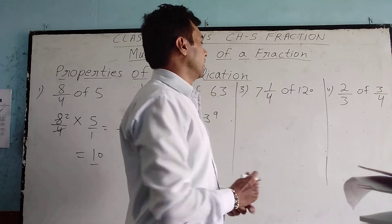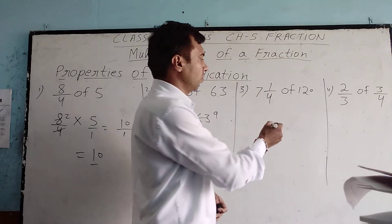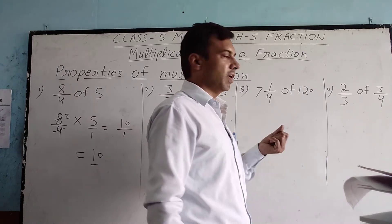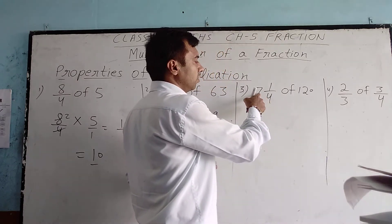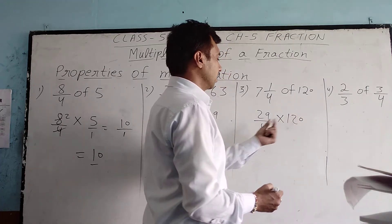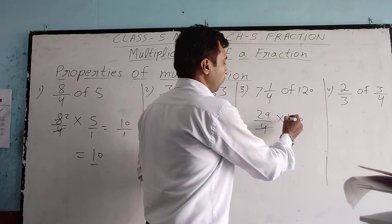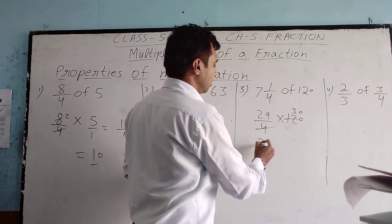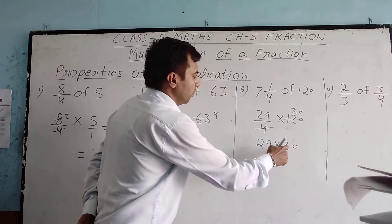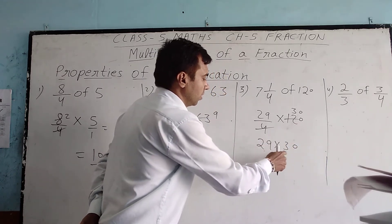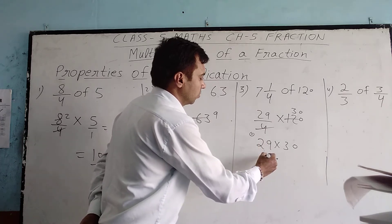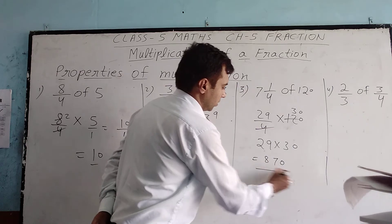Next question: 7 and 1 by 4 of 120. This fraction is a mixed fraction, so first we convert it into an improper fraction. 4 multiplied by 7 is 28, plus 1 gives 29. So it becomes 29 by 4 multiplied by 120. We can divide: 4 goes into 120 giving 30. Now we multiply 29 by 30. We multiply 3 by 29, getting 87, then add 0 to get 870. That is the product.